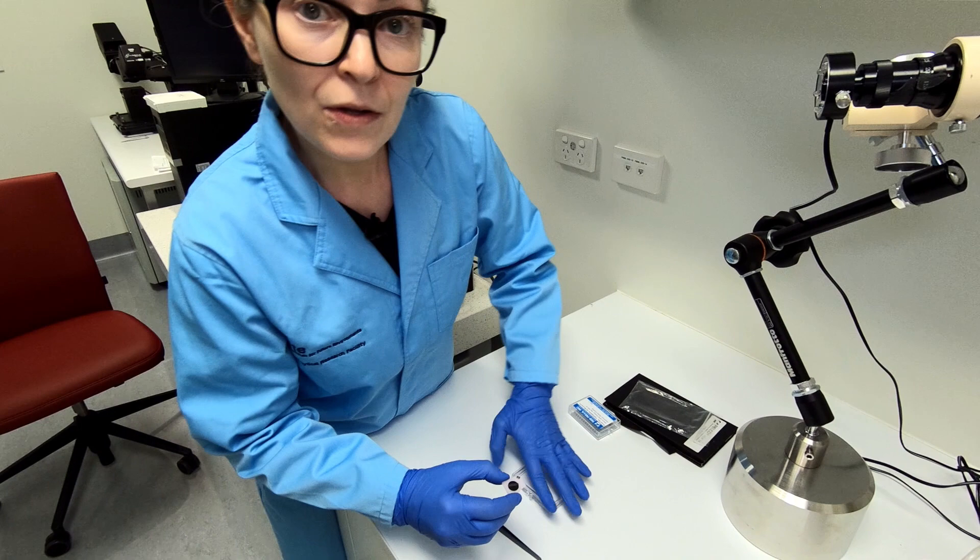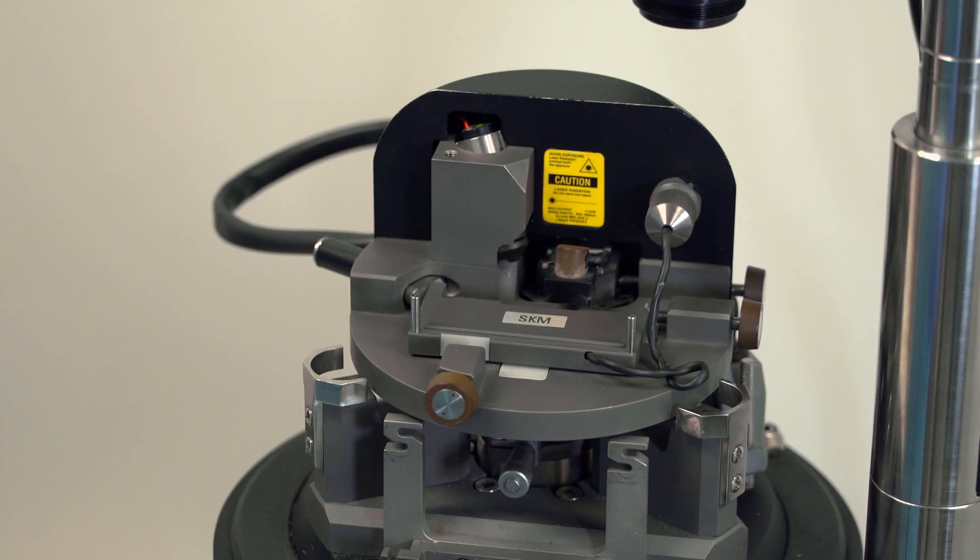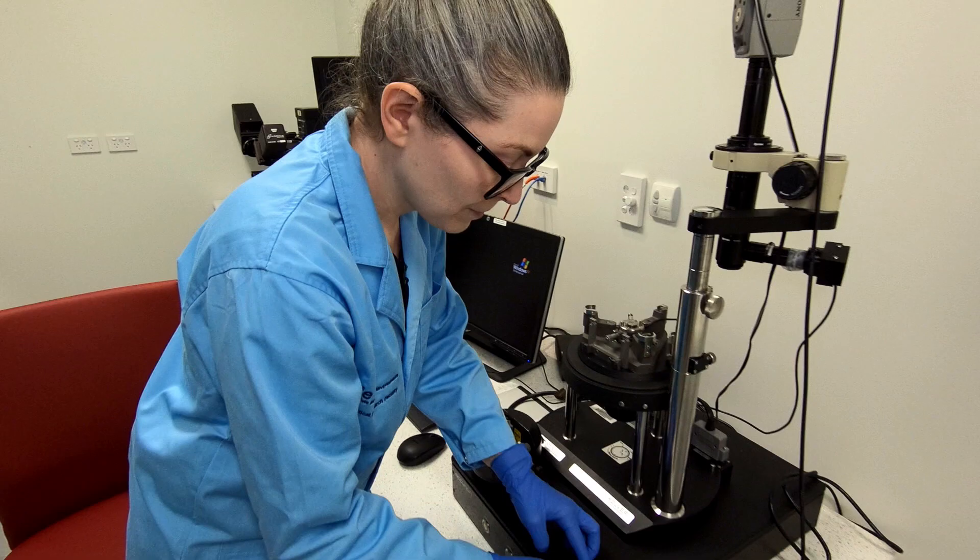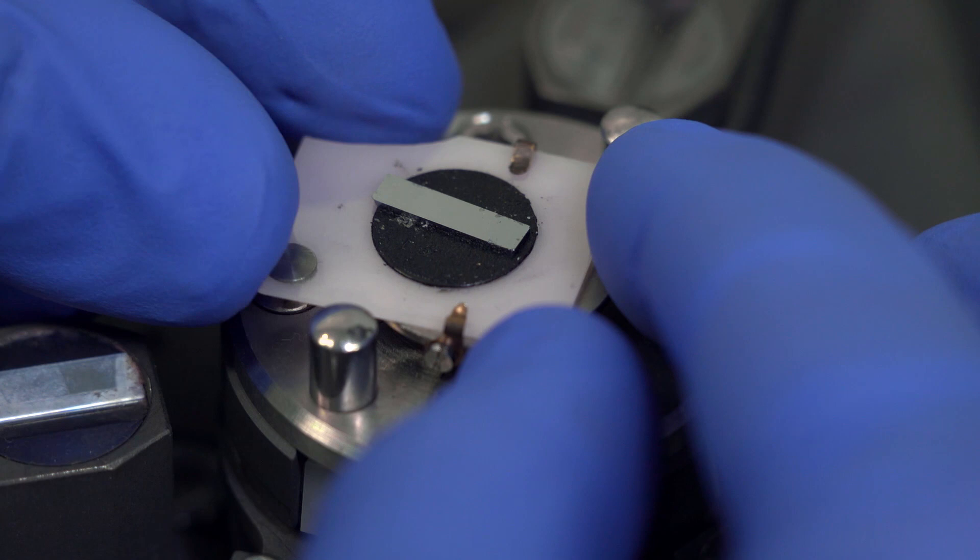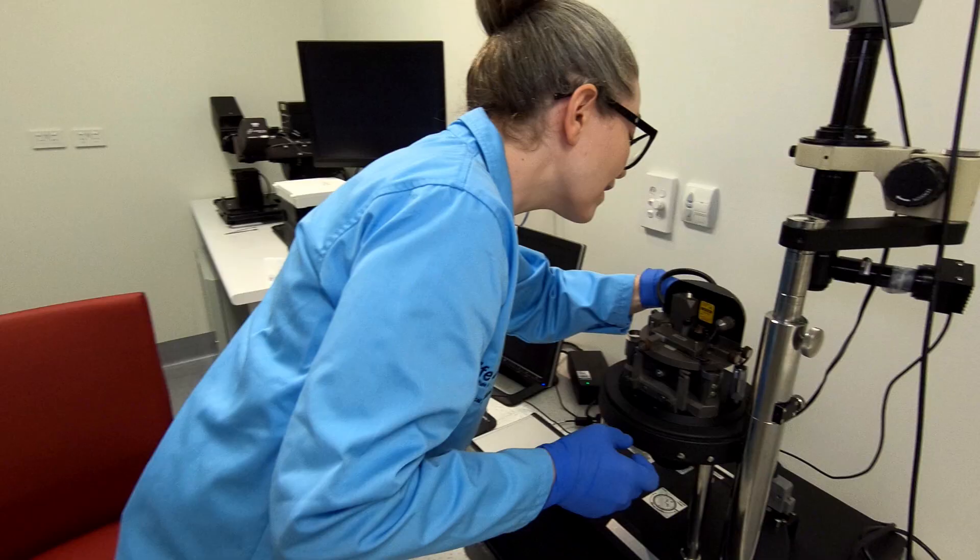Next, we bring it to the instrument where we have to remove the microscope head in order to install the sample. It slides in. We put the head back into position, secure the cabling, and we're ready to get started.